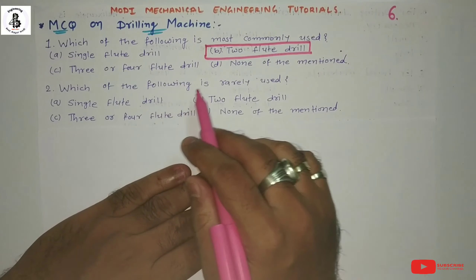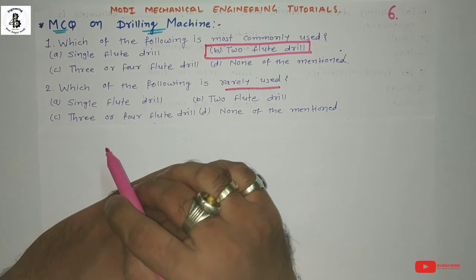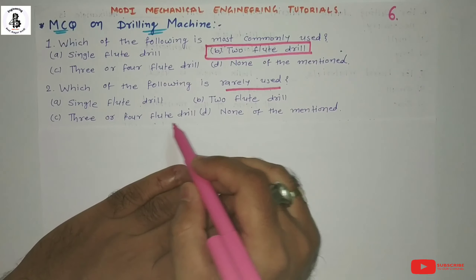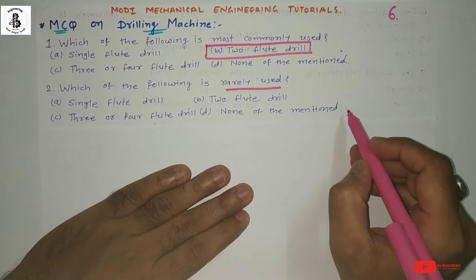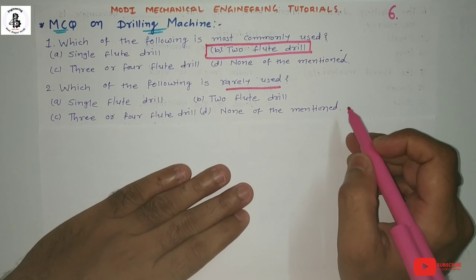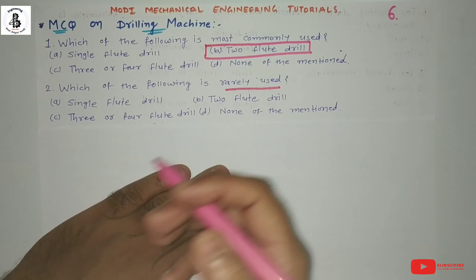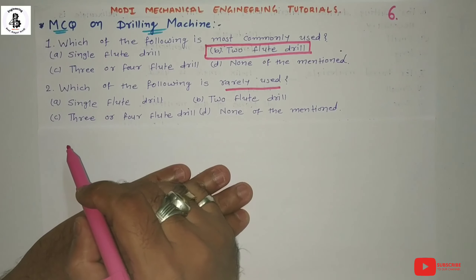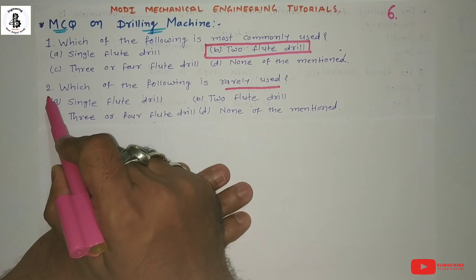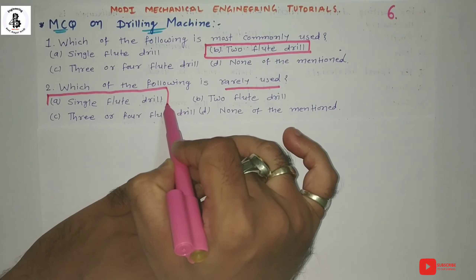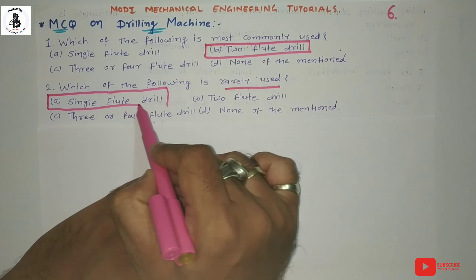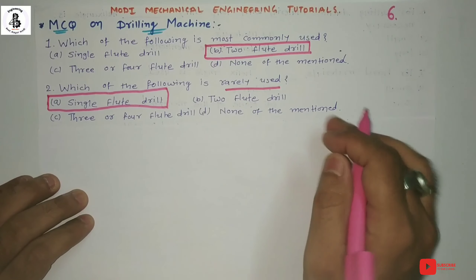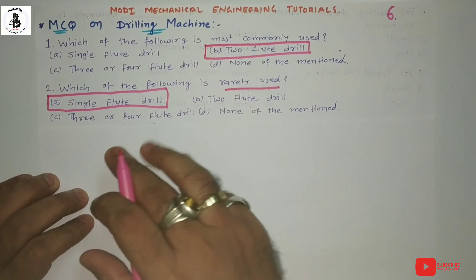Question two: Which of the following is rarely used? Option A single flute drill. Option B two flute drill. Option C three or four flute drill. Option D none of the above. For normal work requiring less force and less accuracy, the single flute drill is used. Compared to the two flute drill, it has fewer applications in drilling operations. So option A, single flute drill, is the rarely used one.